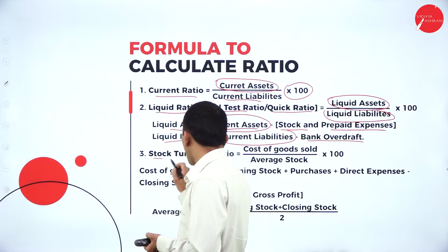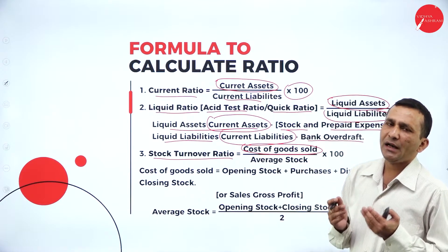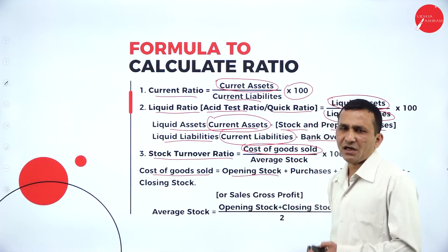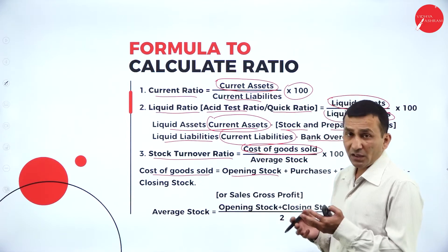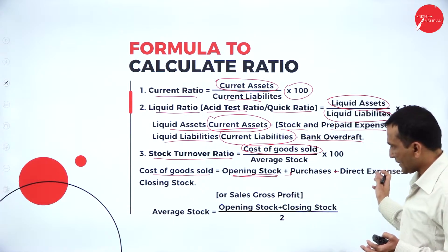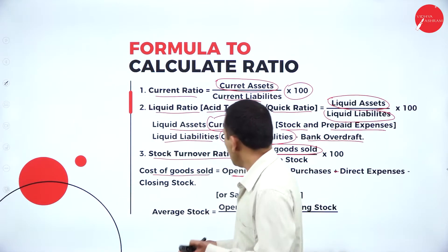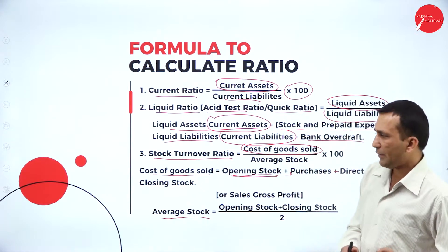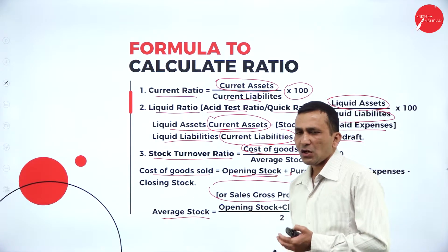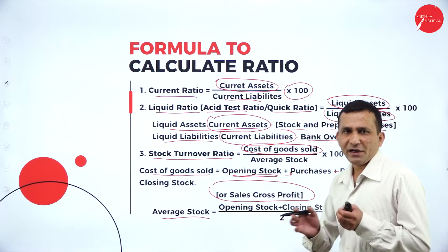Moving to stock turnover ratio. The cost of goods sold is a trading-related item. From the trial balance, take opening stock, add purchases, add direct expenses, and minus closing stock to get cost of goods sold. Average stock is opening stock plus closing stock divided by two, using all information provided in the question.